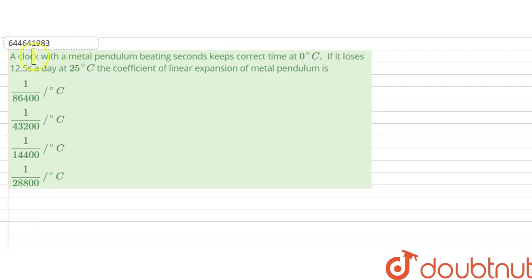The question says: A clock with a metal pendulum beating seconds keeps correct time at 0 degrees Celsius. If it loses 12.5 seconds a day at 25 degrees Celsius when the temperature has been increased to 25 degrees Celsius.